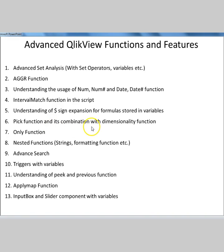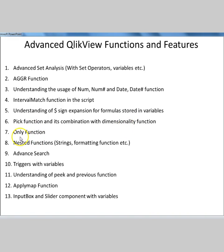The next is the Pick function in combination with Dimensionality. The Pick function is kind of a replica of an IF function or a Switch function, and it becomes more powerful in the case of a pivot table when used with the Dimensionality function.